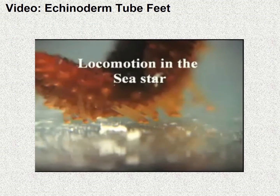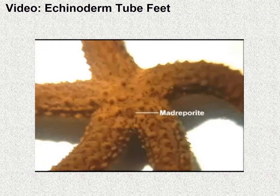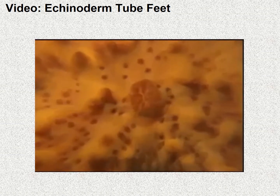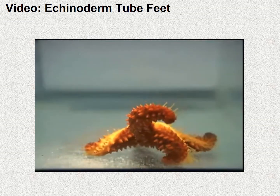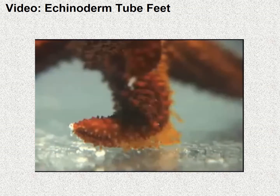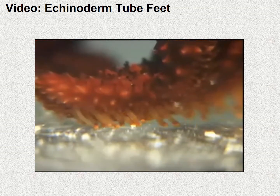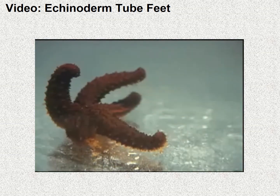Here is a short video of a sea star walking. You can see the little tube feet moving. At the ends of the tube feet are suckers. You can also see the madriporite, which is part of the water vascular system. You can see how slow they move — the previous speed was eight times normal speed, and the close-up of the feet is also at eight times normal speed.